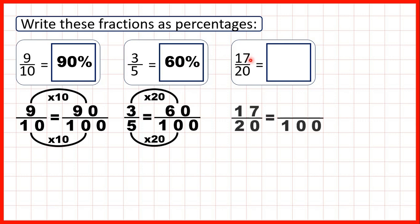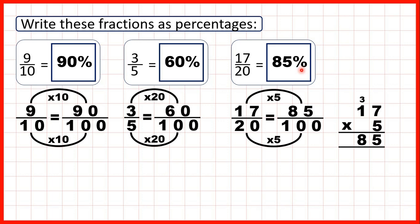We have 17 twentieths. We can find our equivalent fractions: 20 times 5 is 100. To get our percentage we need to work out 17 times 5. We can use short multiplication for this. 7 times 5 is 35, so we write 3, 5. 1 times 5 is 5 plus 3 is 8. So 17 twentieths is equivalent to 85 hundredths, which means it's the same as 85 percent.